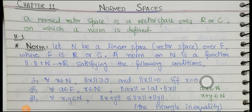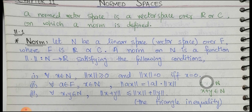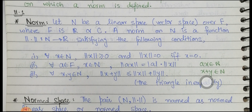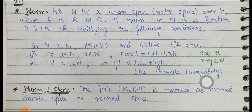In this video, I am going to start Chapter 1 (Chapter 11 from the book by Dr. Abdul Majid), which is about normed spaces. In simple words, a normed space or a normed vector space is a vector space over ℝ or ℂ on which a norm is defined. Let N be a linear space (a vector space) over field F, where F must be ℝ or ℂ. A norm on N is a function from N to ℝ satisfying the following conditions.